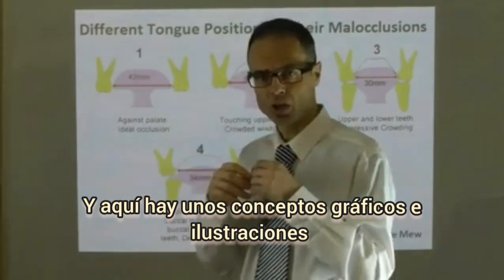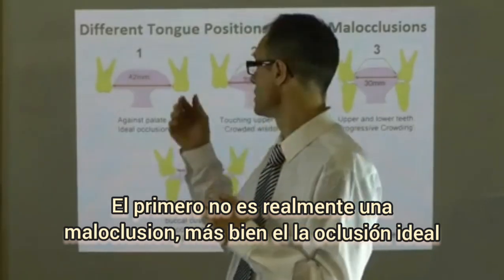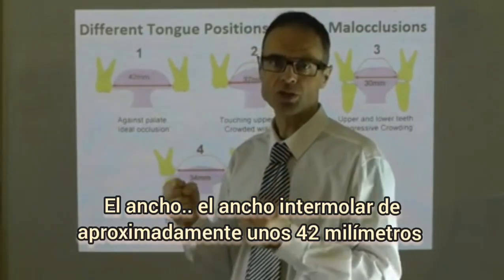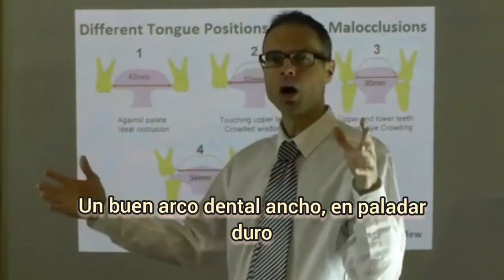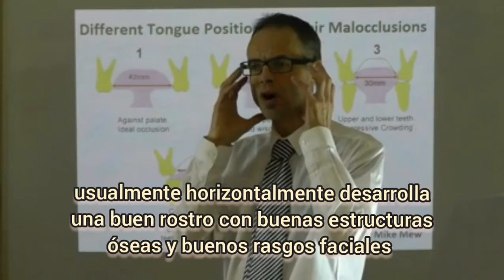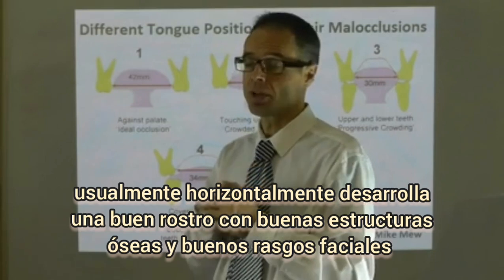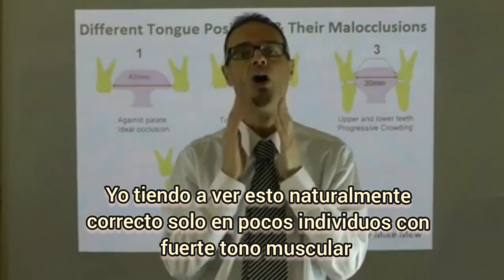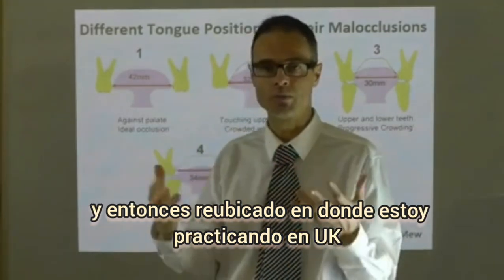Here are some graphic concepts and illustrations. The first is not really a malocclusion — it would be an ideal occlusion. With an inter-molar width of approximately 42mm, the tongue is fully up into the roof of the mouth at rest. A nice broad, wide dental arch, a shallow palate, usually a horizontally developed face with good bone structure and good features. I tend to see this only naturally occurring in a few individuals with strong muscle tone, often brought up in less well-developed countries and then relocated to where I'm practicing in the UK.